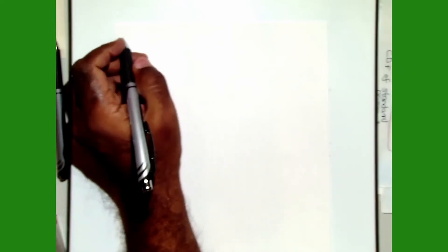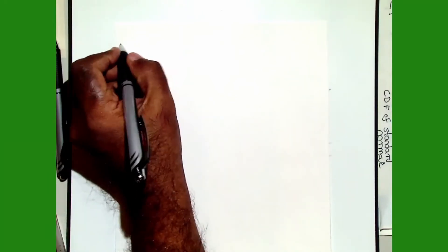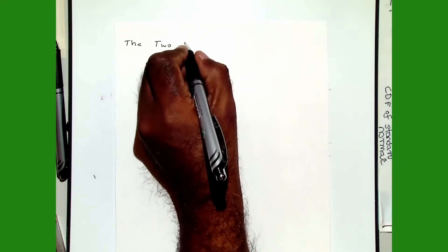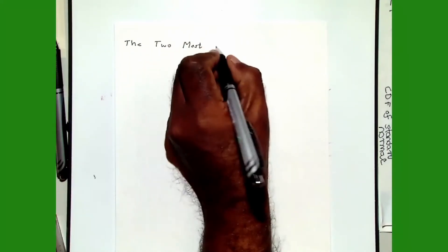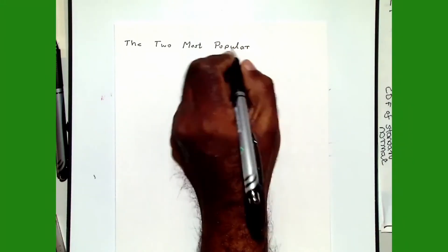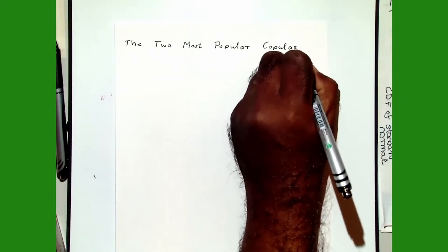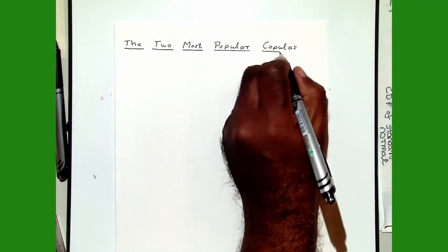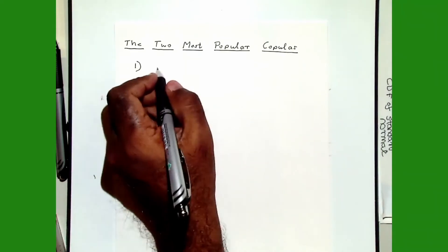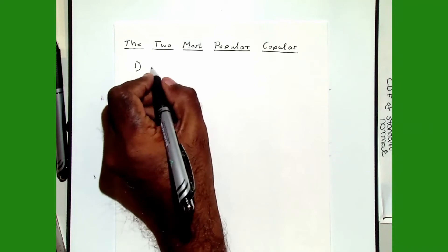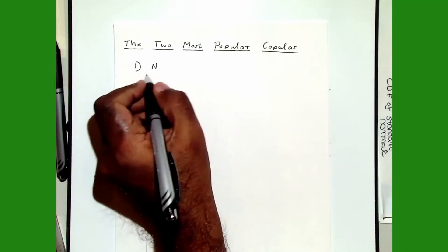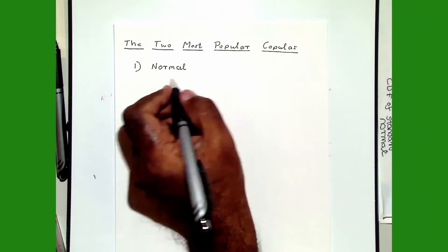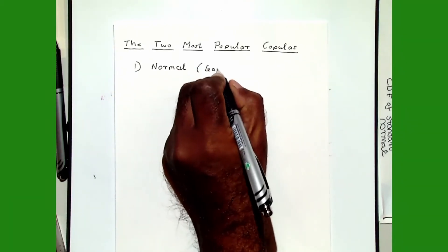In this video I will talk about the two most popular models for copulas. The most popular copula — and I'm using the word 'was' for a reason, which I will explain in a few minutes — was the Gaussian copula, or the normal copula.